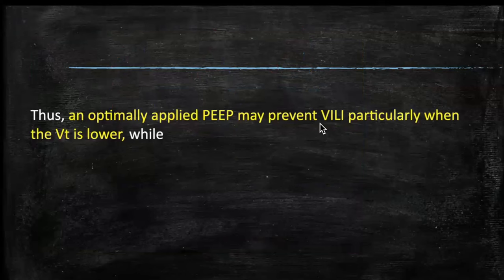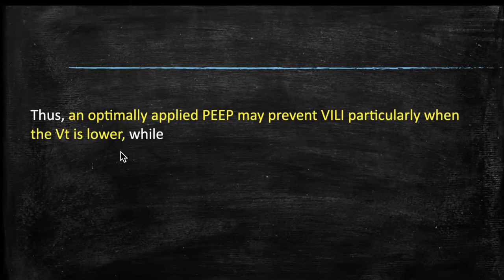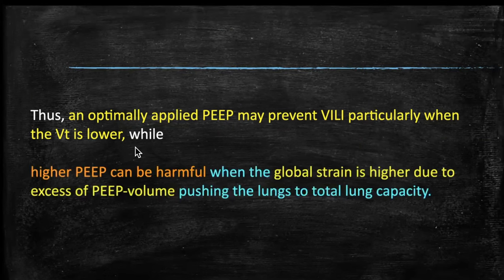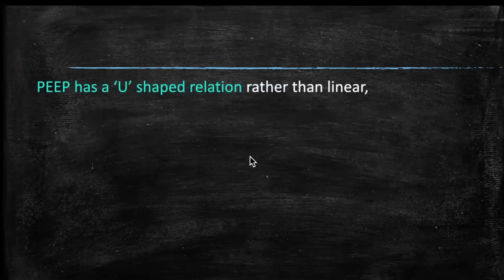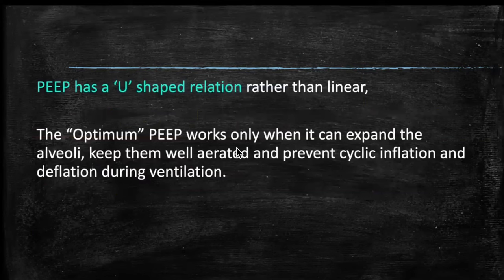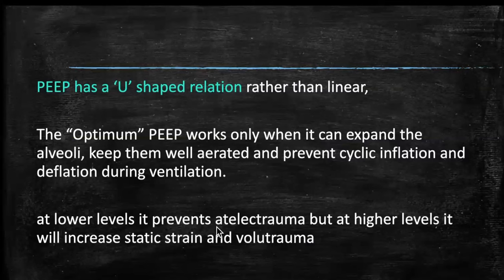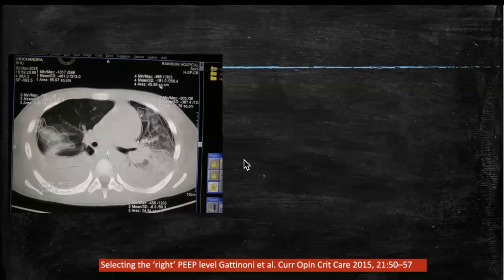Optimally applied PEEP may prevent ventilator injury, particularly when tidal volume is lower, keeping end-inspiratory lung volume away from total lung capacity. Higher PEEP can be harmful when global strain is excessive due to excess PEEP volume. PEEP has a U-shaped relationship: at lower levels it prevents atelectrauma; at higher levels it increases static strain and volume trauma. PEEP works by keeping alveoli open during inspiration and expiration, preventing cyclic inflation and deflation.